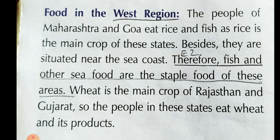The next heading is food in the west region. The people of Maharashtra and Goa eat rice and fish, as rice is the main crop of these states and they are situated near the sea coast, so fish and other sea food are the staple food of these areas. Wheat is the main crop of Rajasthan and Gujarat, so people in these states eat wheat and its products.